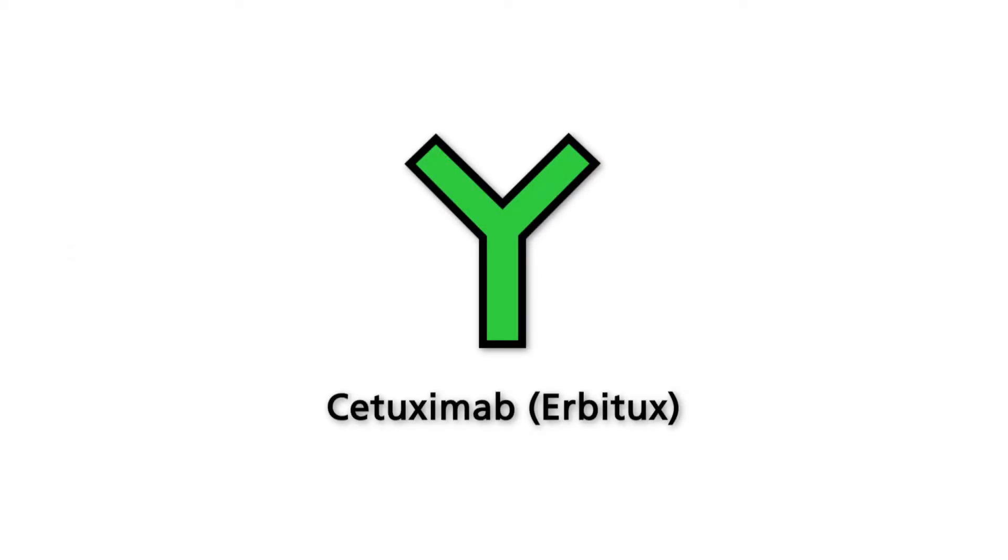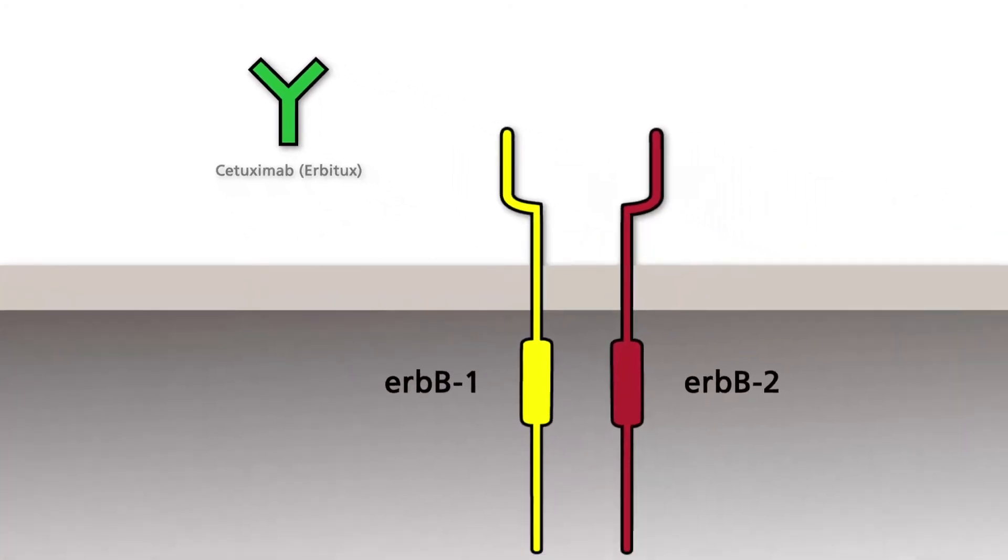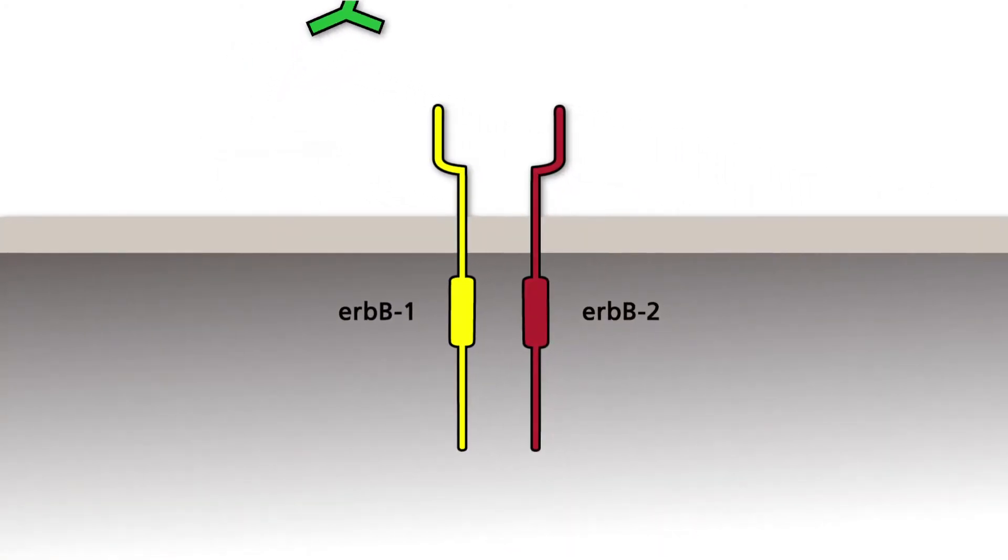The antibody Cetuximab, registered commercially as Erbitux, is a prominent example of an antibody that acts against EGF receptors. Cetuximab binds to an antigenic site within the extracellular domain of the EGF receptor ERB-B1 and inhibits the binding of its ligand EGF.